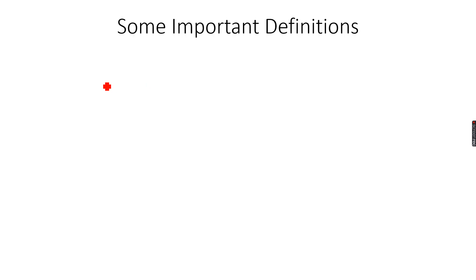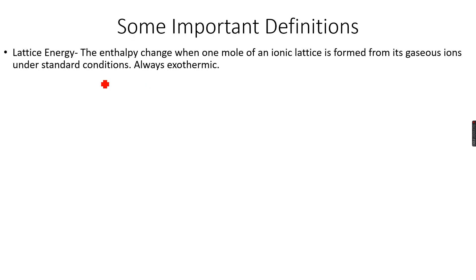Let's do some important definitions. First we will do lattice energy, which is the main topic of concern. The enthalpy change when one mole of ionic lattice is formed from its gaseous ions under standard conditions. For example, we want to form the ionic compound NaCl, which is sodium chloride, often known as common salt. The lattice energy will be the energy change, the enthalpy change.